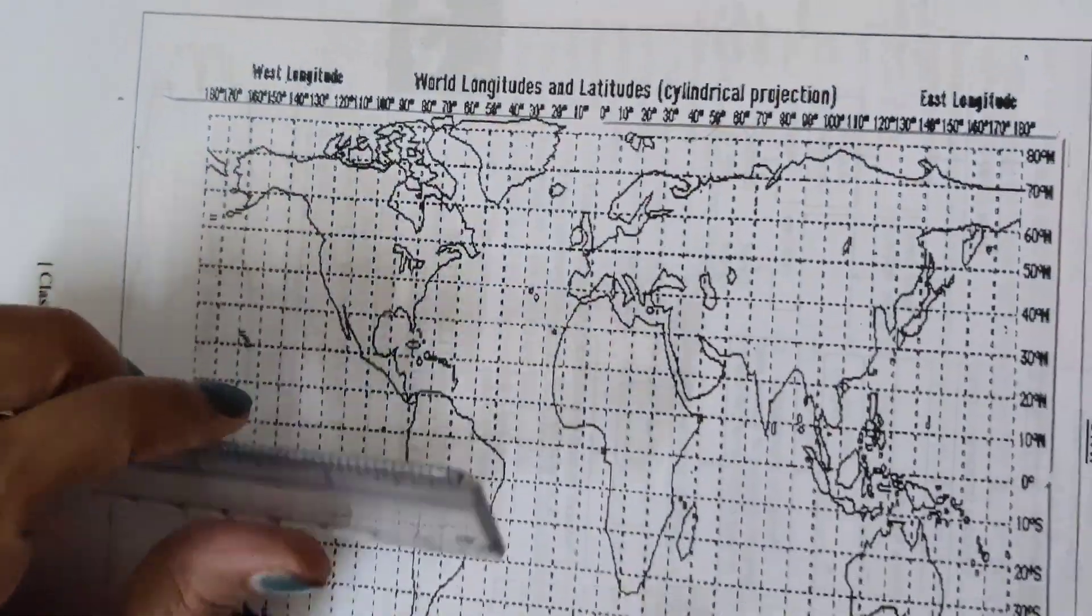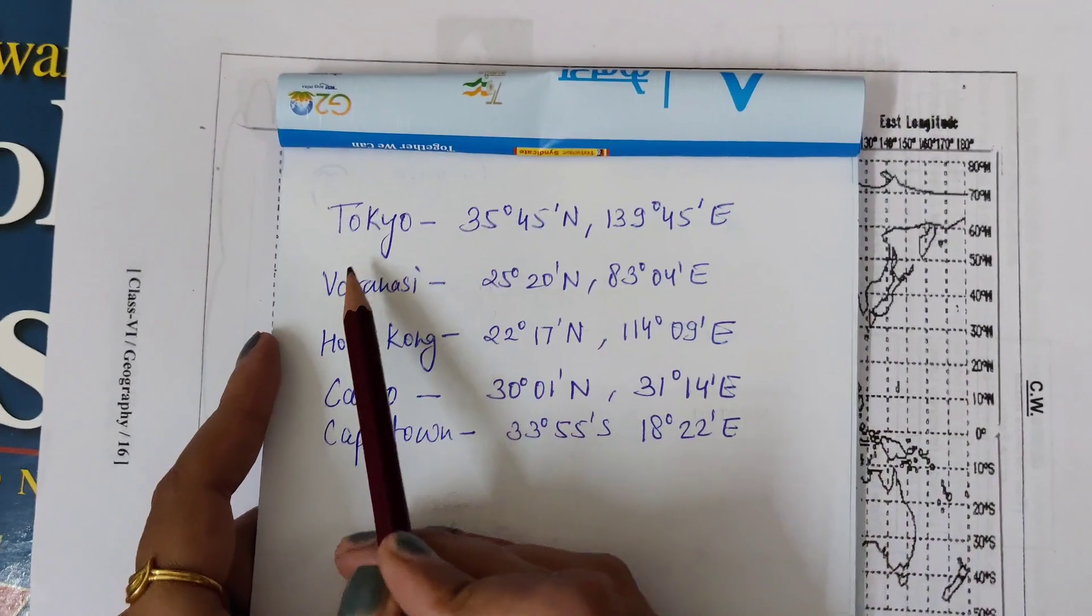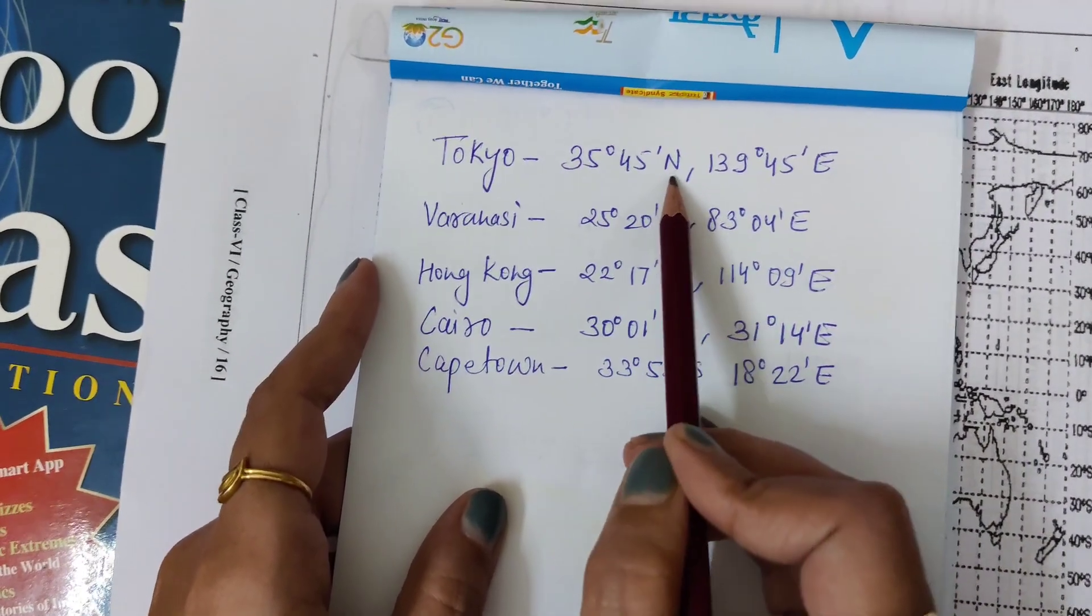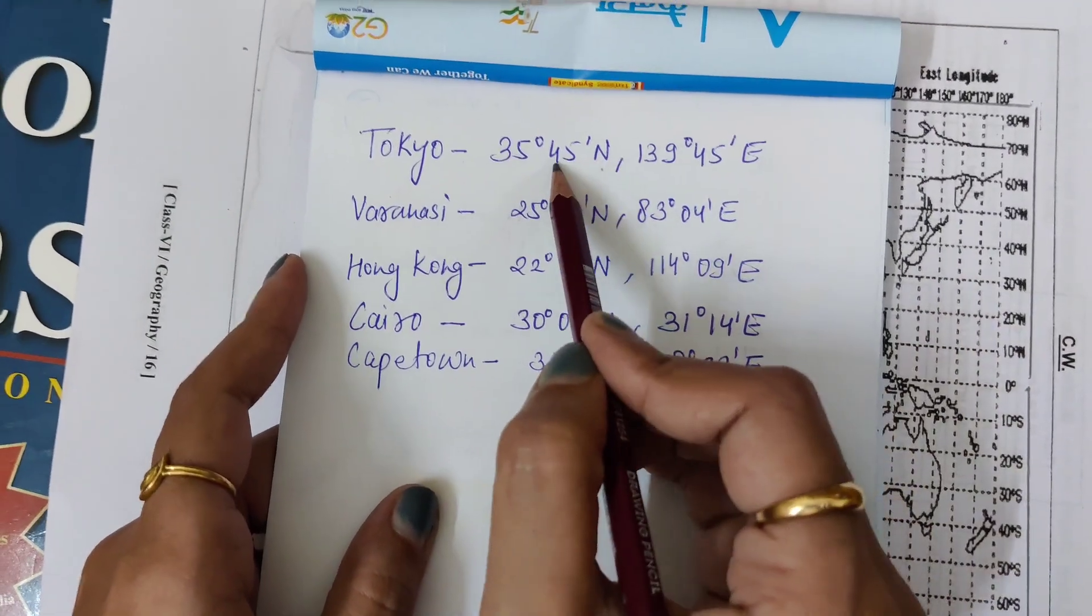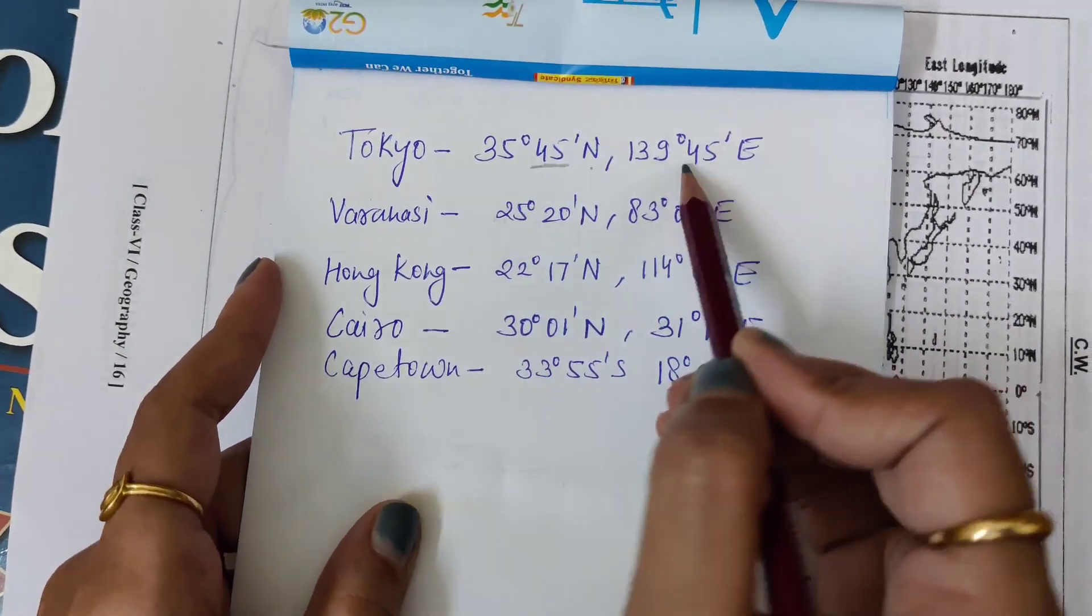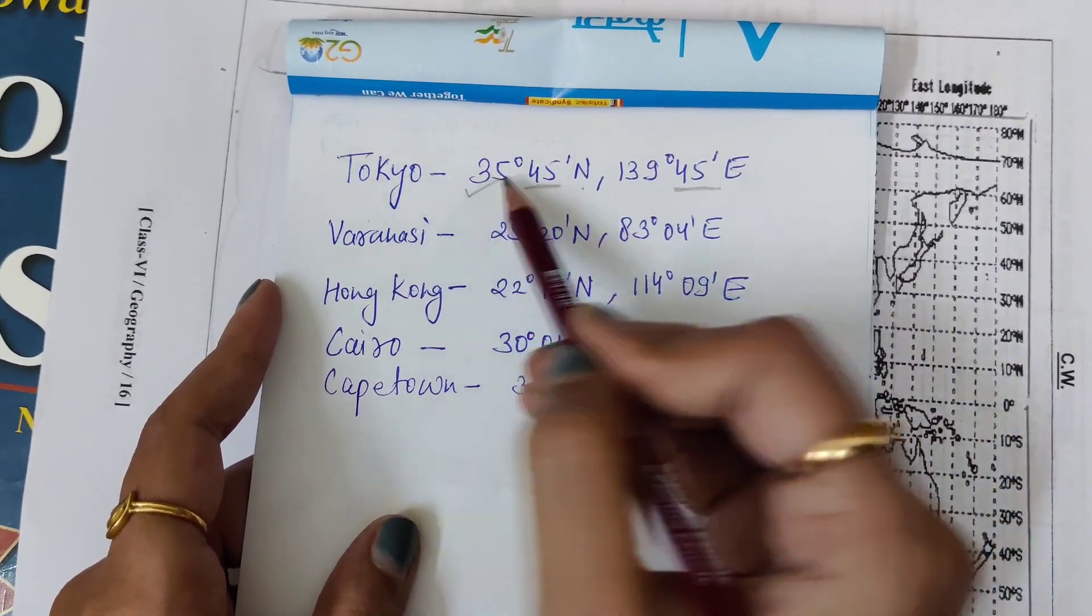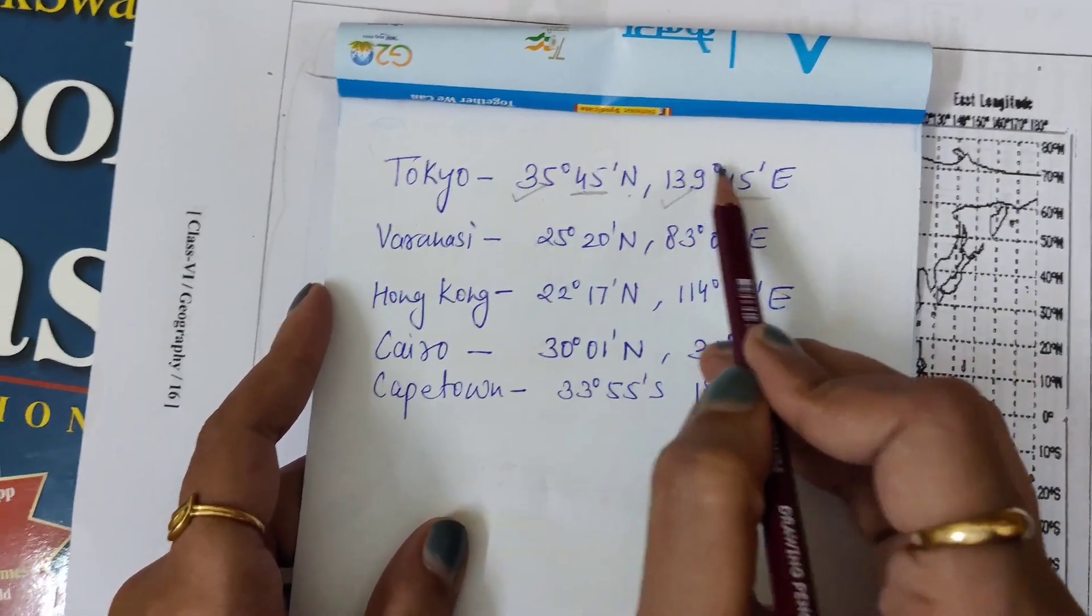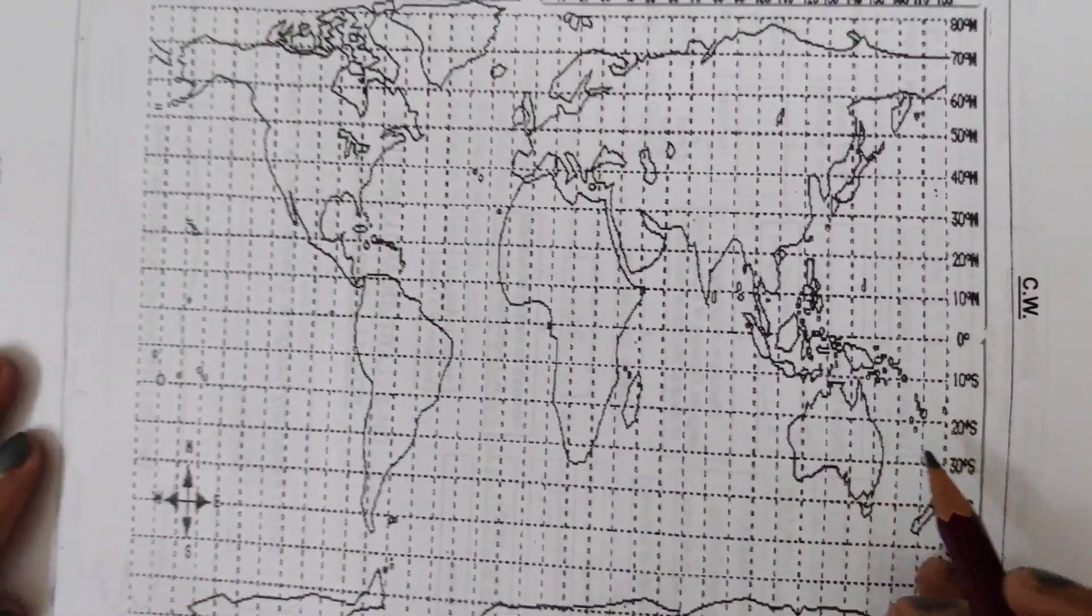We are going to mark Tokyo first: 35 degrees 45 minutes north, 139 degrees 45 minutes east. Do not get confused with the minutes part because we will not be marking it exactly. Just focus on 35 degrees north and 139 degrees east.